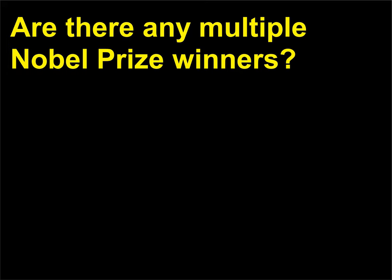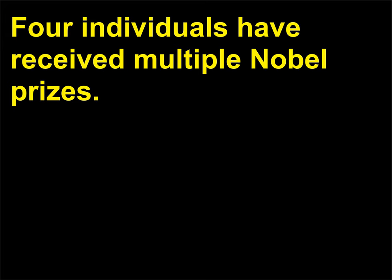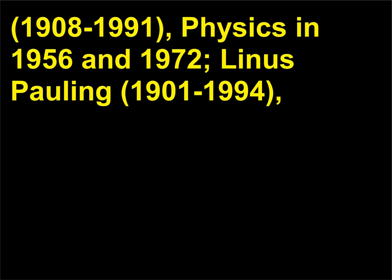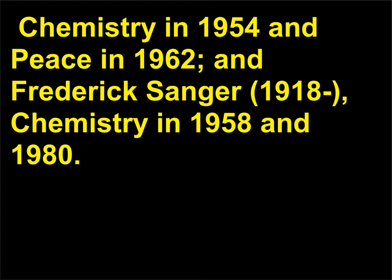Are there any multiple Nobel Prize winners? Four individuals have received multiple Nobel Prizes. They are: Marie Curie, 1867–1934, Physics in 1903 and Chemistry in 1911; John Bardeen, 1908–1991, Physics in 1956 and 1972; Linus Pauling, 1901–1994, Chemistry in 1954 and Peace in 1962; and Frederick Sanger, 1918, Chemistry in 1958 and 1980.